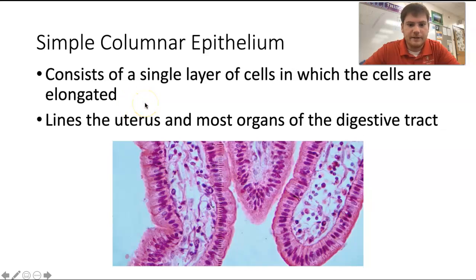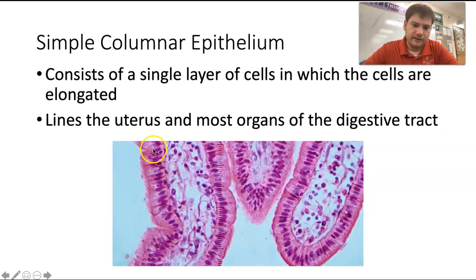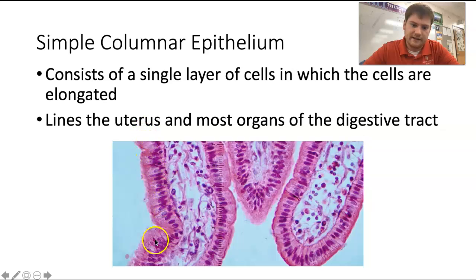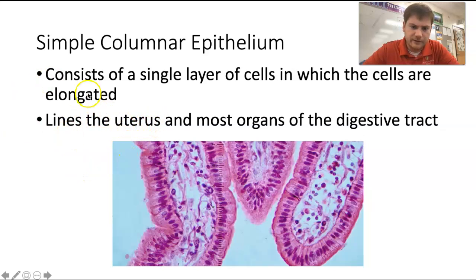Simple columnar epithelium — simple meaning one layer, and columnar meaning shaped like columns. You can see how they're a lot longer, and all their nuclei are kind of towards the bottom, closer to the basement membrane. The stuff in the middle is also connective tissue. We're really just looking at these darker cells — those are the simple columnar epithelium. They line the uterus and most of the organs in the digestive tract, and there may also be some cilia on them.